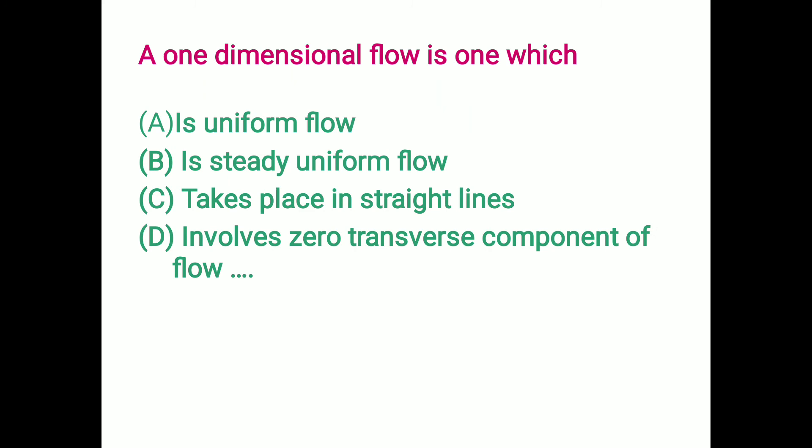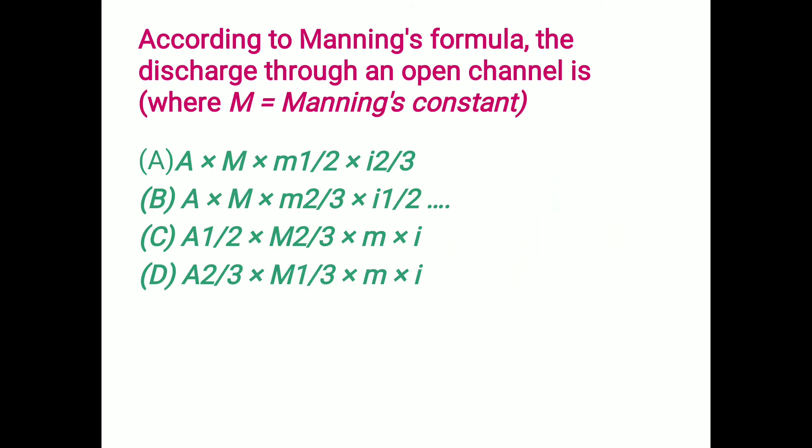One-dimensional flow is one which involves zero transverse component of flow — option D is correct. According to Manning's formula, the discharge through an open channel is Q = A × M × R^(2/3) × I^(1/2), where M is Manning's constant. Option B is the correct answer.